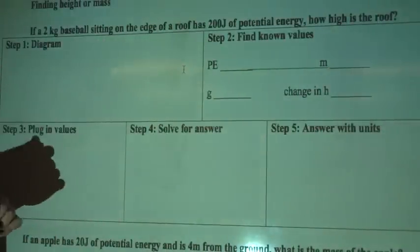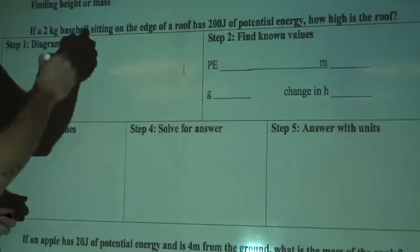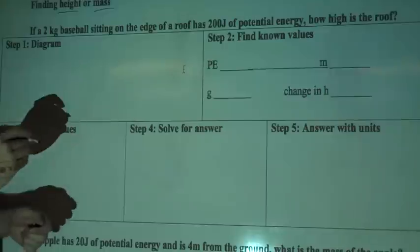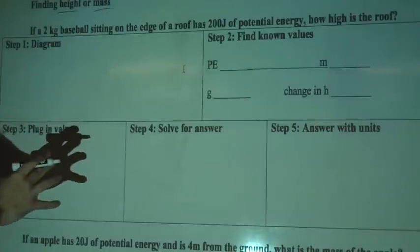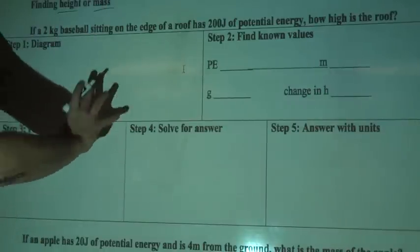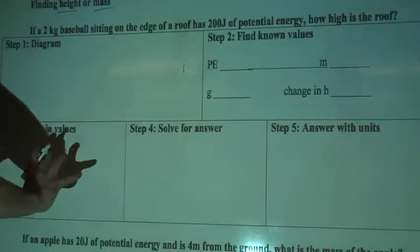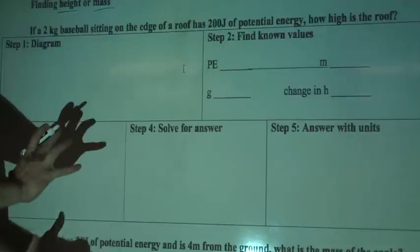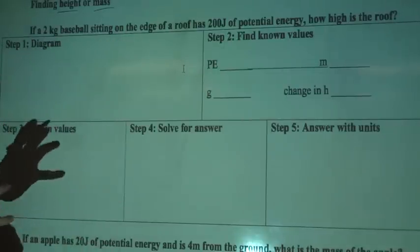The only questions that get a little bit more complicated are ones where you're not looking for potential energy, you're looking for height or mass. We're going to use the same equation and everything, same diagram, find known values. The only difference is we're going to be dividing to isolate the variable or get it by itself.